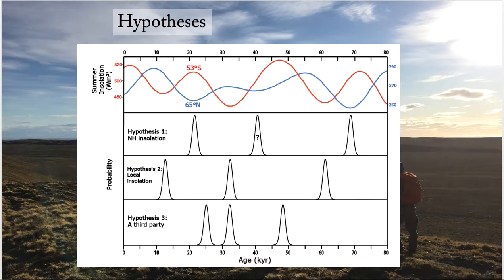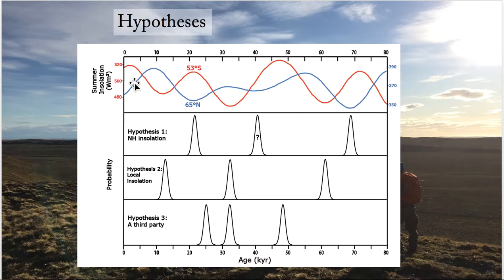But insolation intensity is out of phase between the two hemispheres, which is shown in the red and the blue curves, where the red curve represents insolation in the southern hemisphere and the blue curve represents insolation in the northern hemisphere. They're pretty nicely out of phase, meaning that if insolation were the only control on glacier change, while northern hemisphere glaciers expand, southern hemisphere glaciers like those in Chile would retreat.